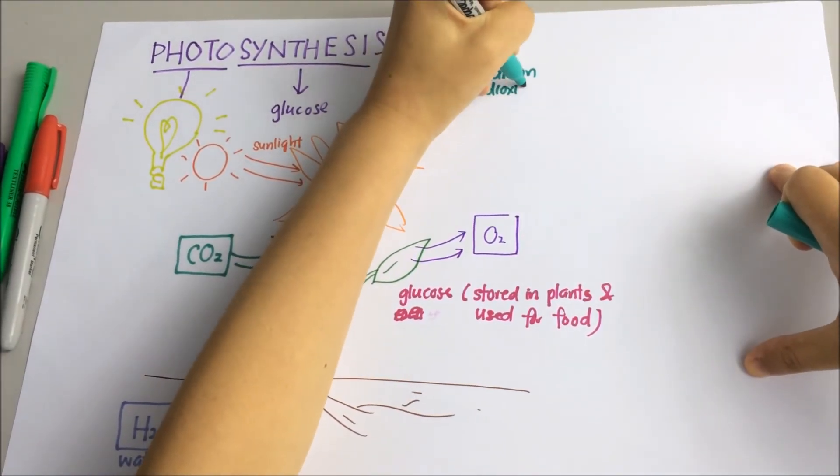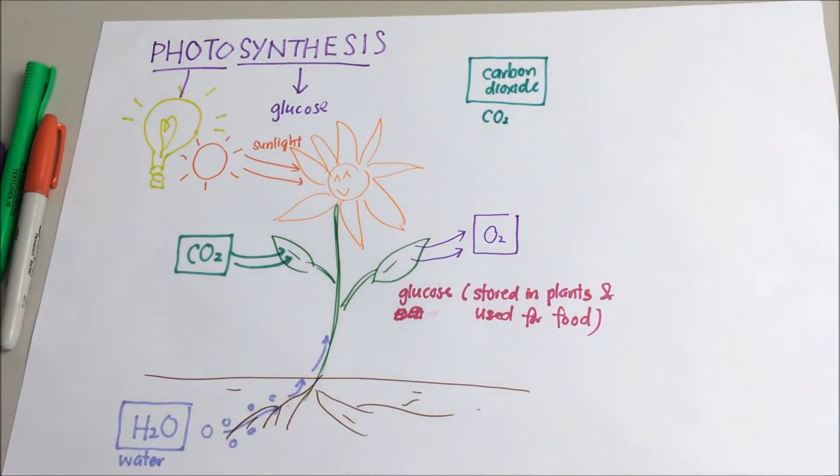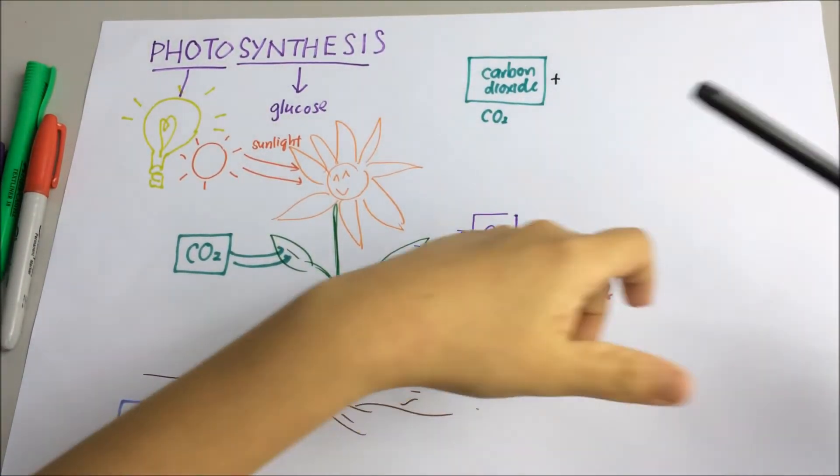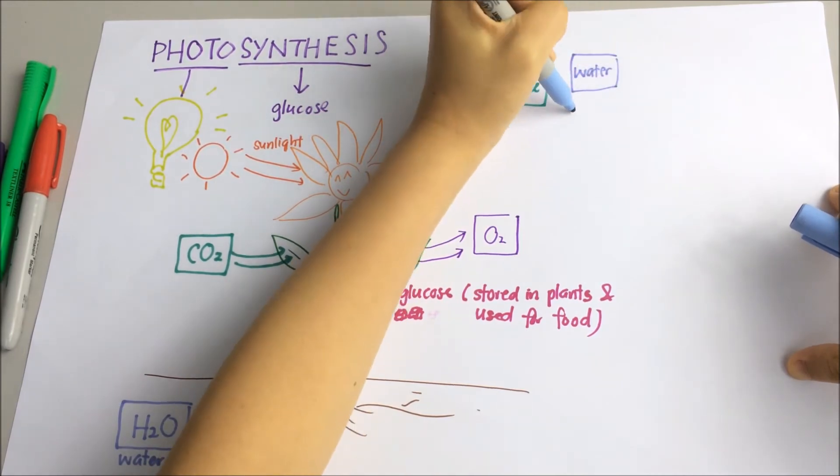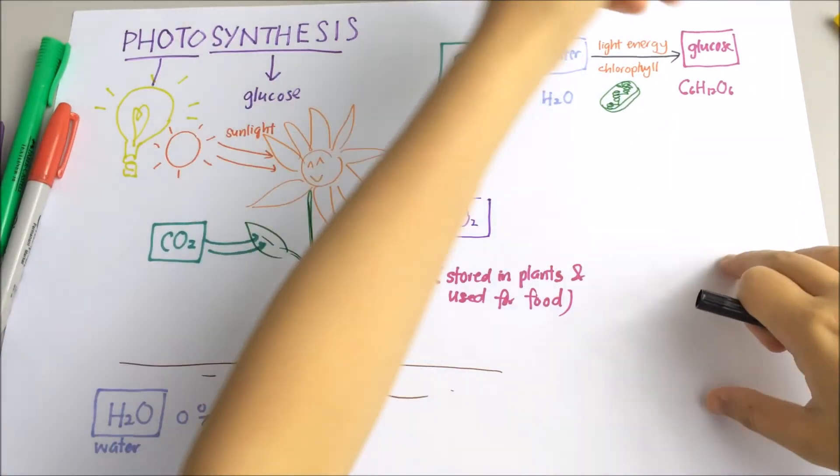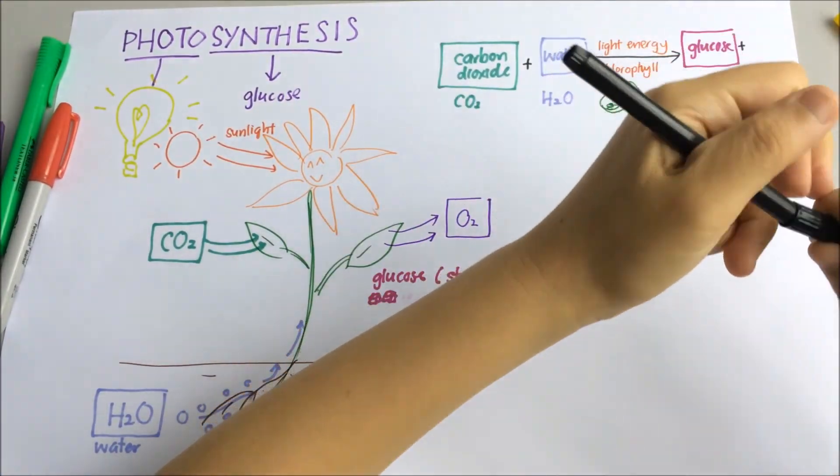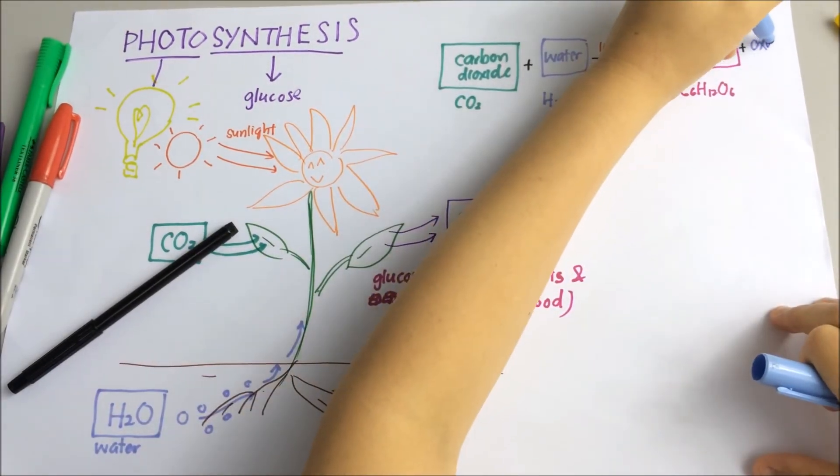Now, here is the equation for photosynthesis. The raw materials are carbon dioxide and water. Because light energy is not a substance, we write it in this way. So light energy trapped by the chlorophyll will then be converted into glucose and oxygen.